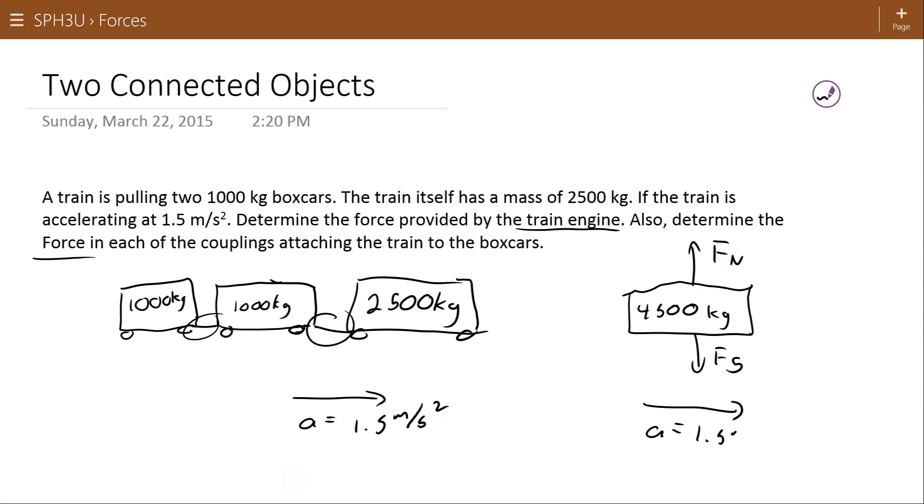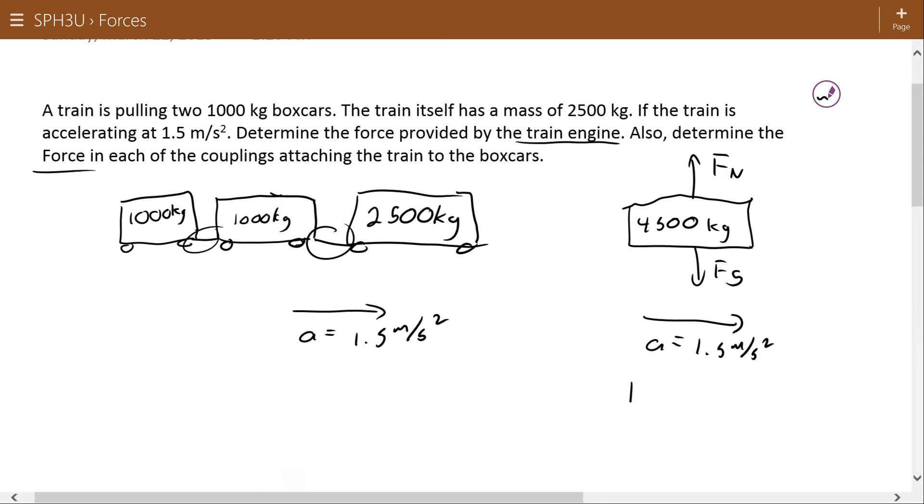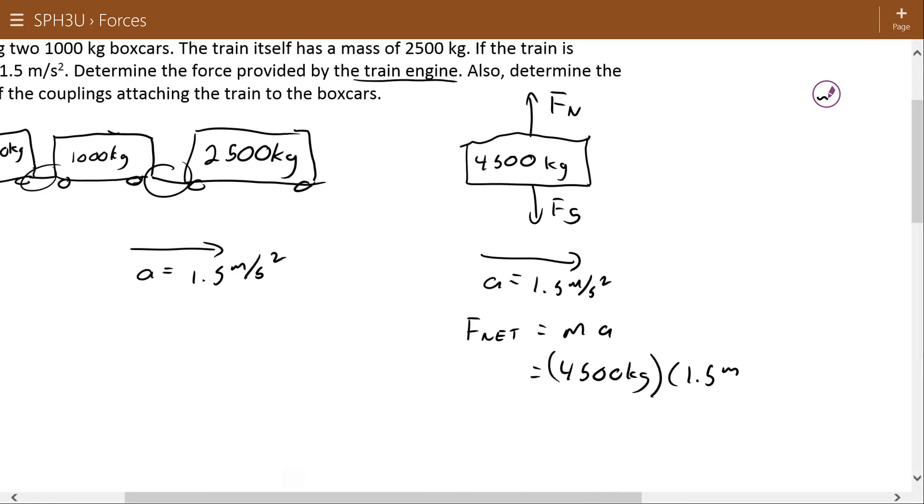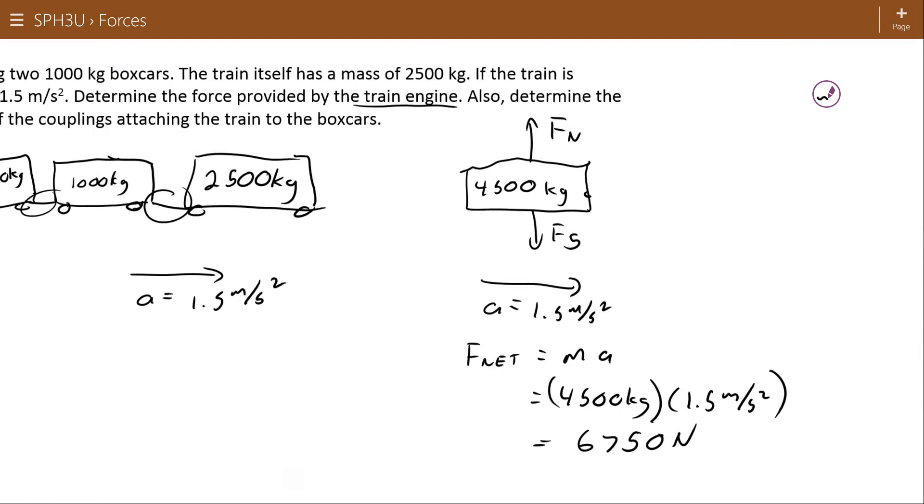We have an acceleration of 1.5 meters per second squared. And we can use Newton's second law to convert that into a force. F_NET equals m times a, which equals 4,500 times 1.5, equals 6,750 Newtons. Now we're going to assume that the train engine is the thing supplying that force. So 6,750 Newtons, that's the force of the engine. That's the answer to the first part.